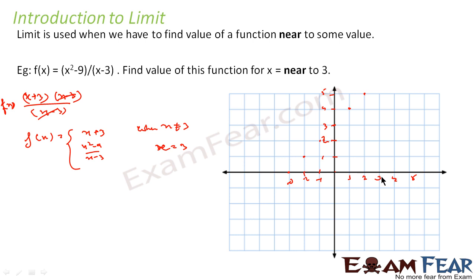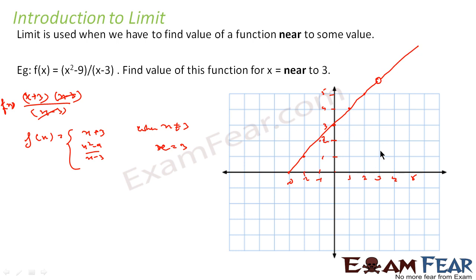At x = 3, this condition — cancelling (x - 3) — is not valid. If you substitute x = 3 into the original expression, you get (9 - 9) / (3 - 3) = 0/0, which is undefined. So the graph has a hole at x = 3; this value is not defined, and f(3) is undefined.